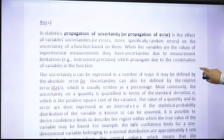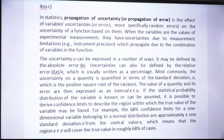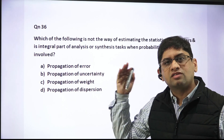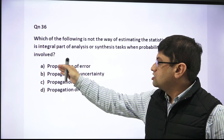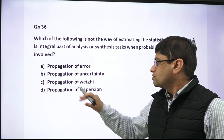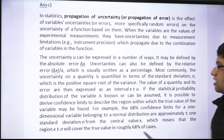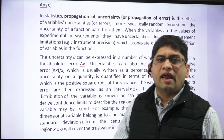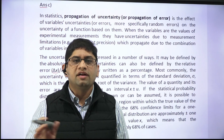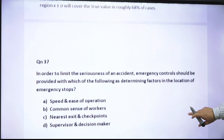Propagation of uncertainty and propagation of error are both the same — they describe the effect of variable uncertainties and random errors on the uncertainty of a function. Since these two are essentially identical, they cannot both be the answer. Weight, on the other hand, is an absolute term — it is not a relative term. So the answer is propagation of weight.